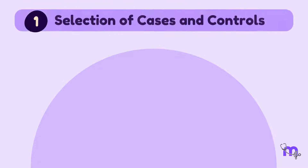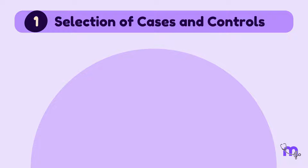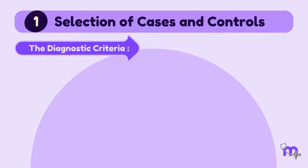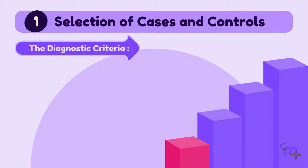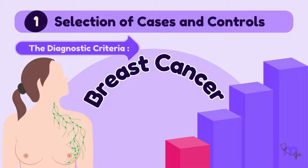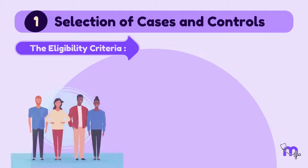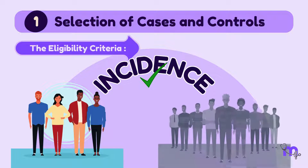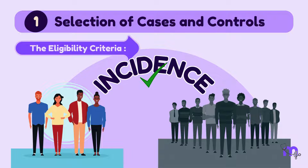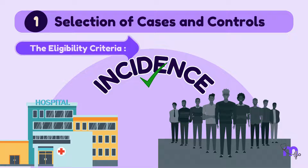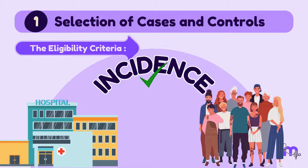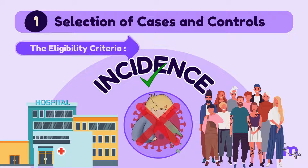In the first step of selecting my cases and controls, I define a case using two specifications. The first is the diagnostic criteria — before I start my study, I include the diagnostic criteria of the disease and the state of the disease, for example, breast cancer stage 1. The next criteria are the eligibility criteria, where I take in only the new cases or incidents without considering the prevalence. My cases are drawn from hospitals or the general population and should represent the community. The controls I select must be free from the disease under study.